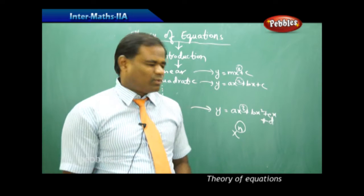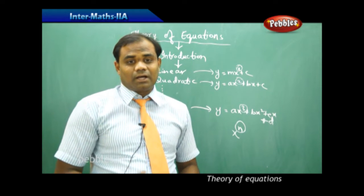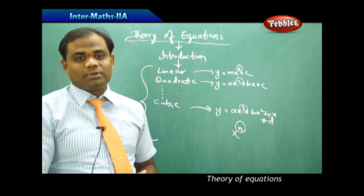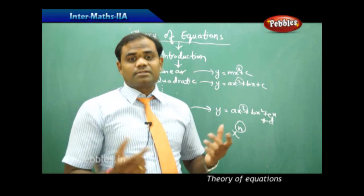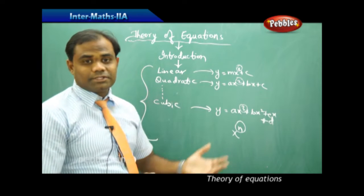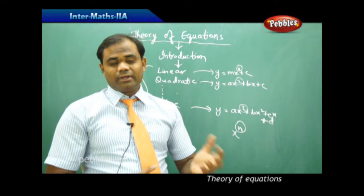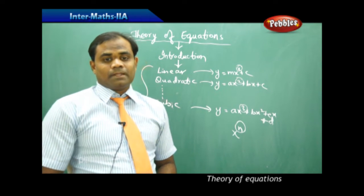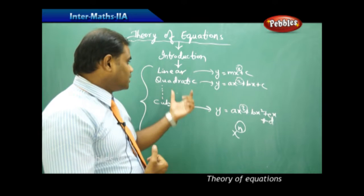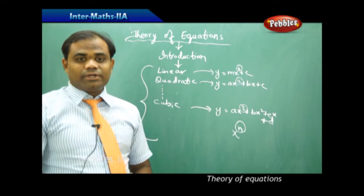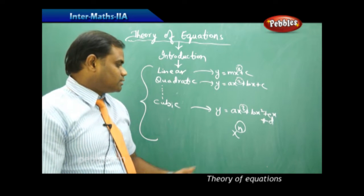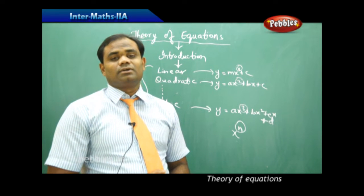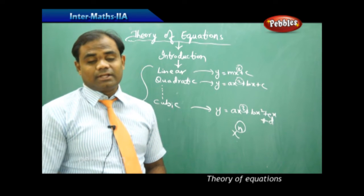It may be any equation whose power is n, or x power 100, x power 1000 — for any equation we examine the properties, examine the roots, and find various other properties. Just as in quadratic equations there are two roots — real and equal, real and unequal, or imaginary/complex — we are going to enter into the general form of x power n equations, called polynomials.